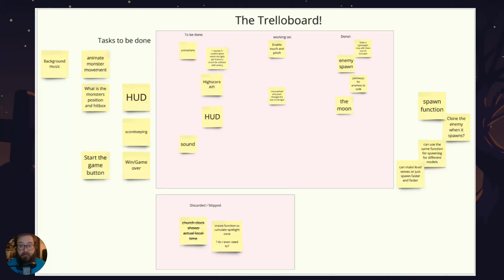I made my own sort of Trello board to have an agile workflow, with columns for things to be done, things I'm working on, things that are done, and things that have been discarded.